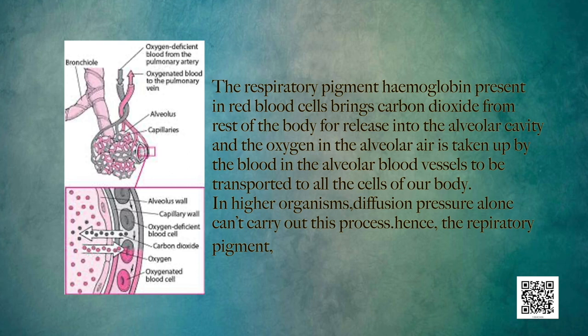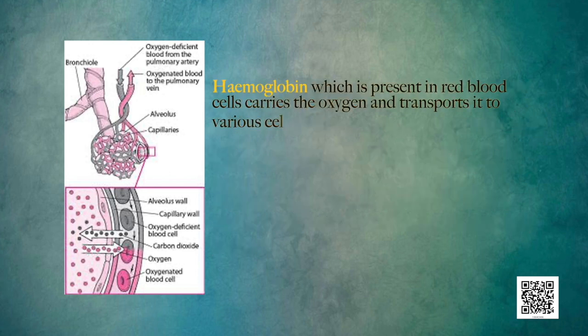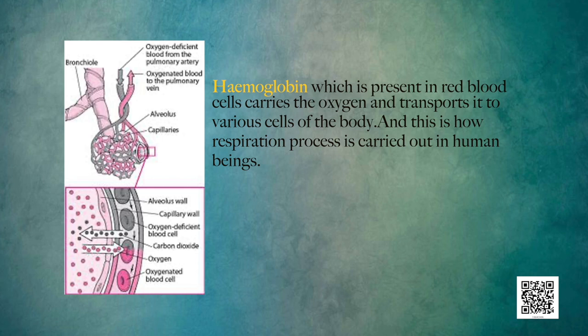Here again we can see how the respiratory and circulatory systems are linked. The respiratory pigment hemoglobin, present in red blood cells, brings carbon dioxide from the rest of the body for release into the alveolar cavity. The oxygen in the alveolar air is taken up by the blood in the alveolar vessels and transported to all the cells of the body. In higher organisms, diffusion pressure alone cannot carry out this process — hemoglobin carries the oxygen and transports it to various cells. This is how respiration is carried out in human beings.